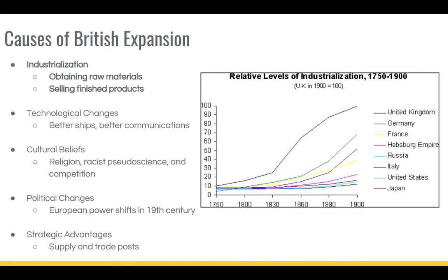An example of this would be India. India produced a great deal of cotton, which was then brought to the United Kingdom and made into finished textiles, and they would sell those textiles back to people in India or around the empire. It was also forbidden for a time for people in India to buy locally-made textiles — they had to buy them from the British.